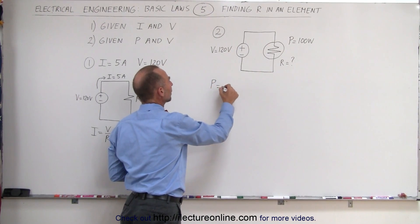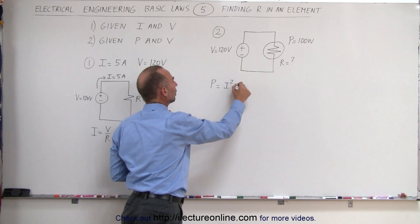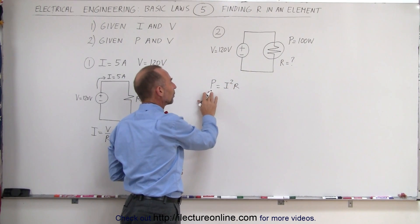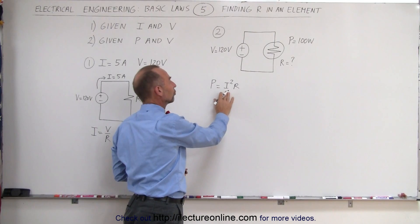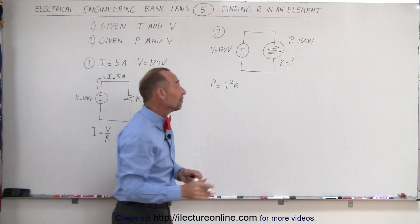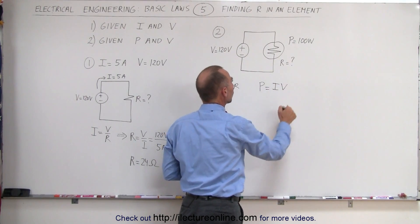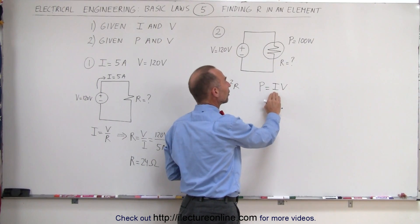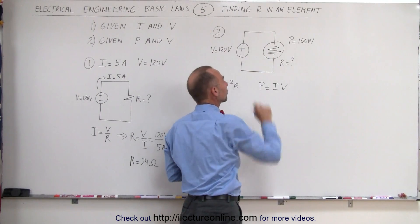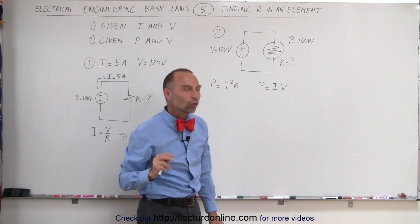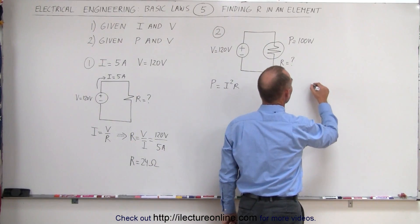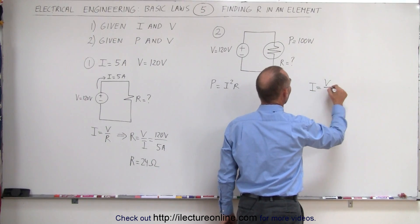The power can be written as I squared R. In other words, the amount of power consumed by a device is the current squared times R. The power delivered to that device can be written as P equals I times V, the amount of current the device draws times the voltage providing that current. We also want to use Ohm's law in this case by saying that I equals V divided by R.